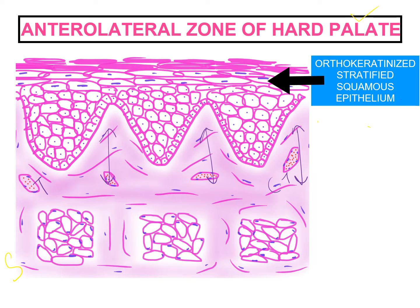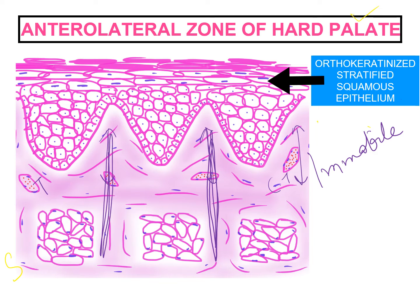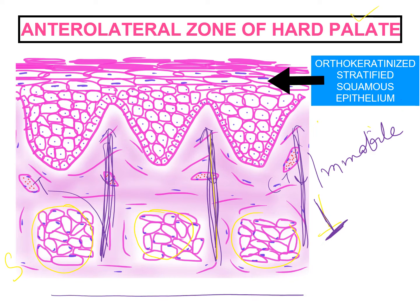The hard palate is highly immobile — it is not possible to move. This is because dense collagen fiber bundles keep the structures in place. These bundles extend through the submucosa, dividing it into spaces at right angles. The thick dense collagen bundles are attached to the periosteum, making it immobile.